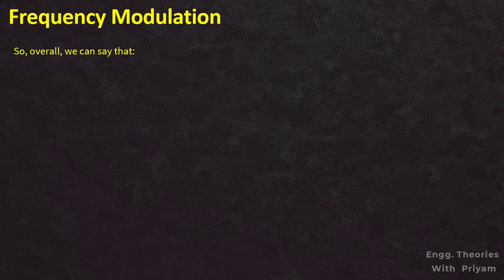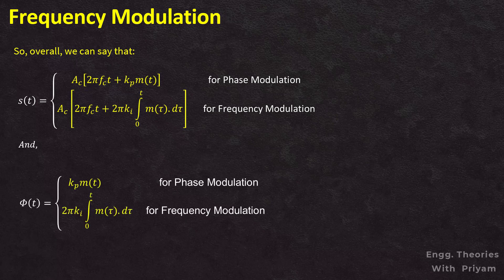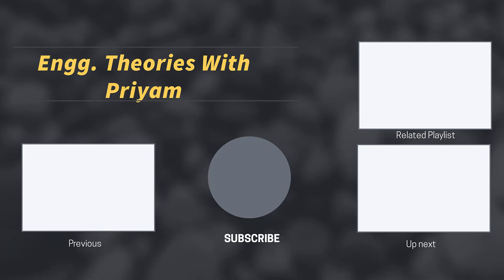Overall, there are two types of angle modulated signals: phase modulated and frequency modulated. For the phase modulated signal: s(t) = Ac·cos(2πfc·t + kp·m(t)). For the frequency modulated signal: s(t) = Ac·cos(2πfc·t + 2πki · ∫₀ᵗ m(τ) dτ). The phase deviation φ(t) = kp·m(t) for PM, and φ(t) = 2πki · ∫₀ᵗ m(τ) dτ for FM.